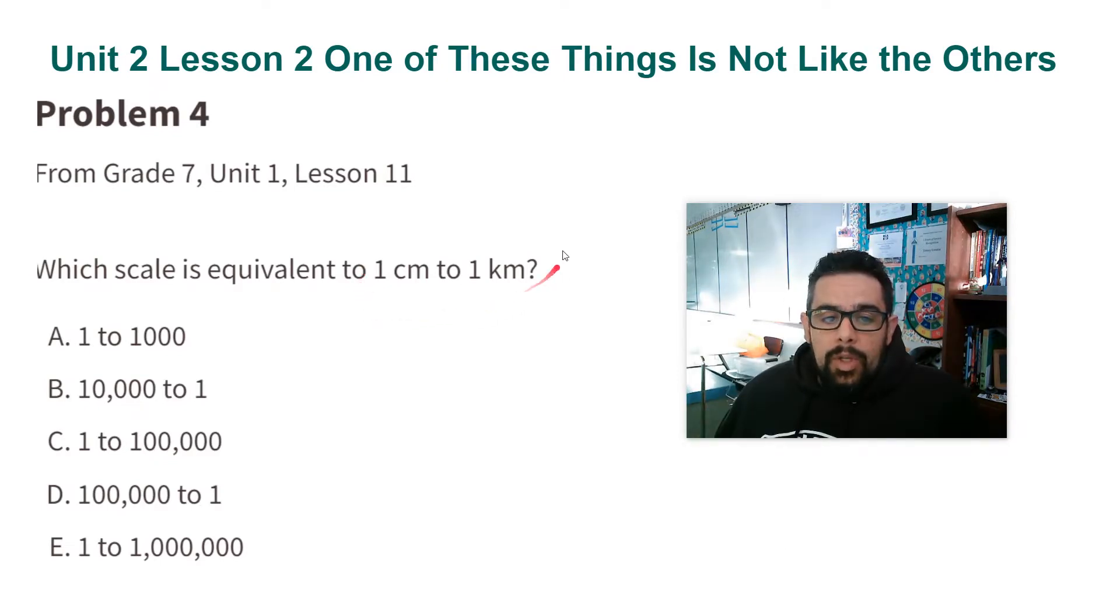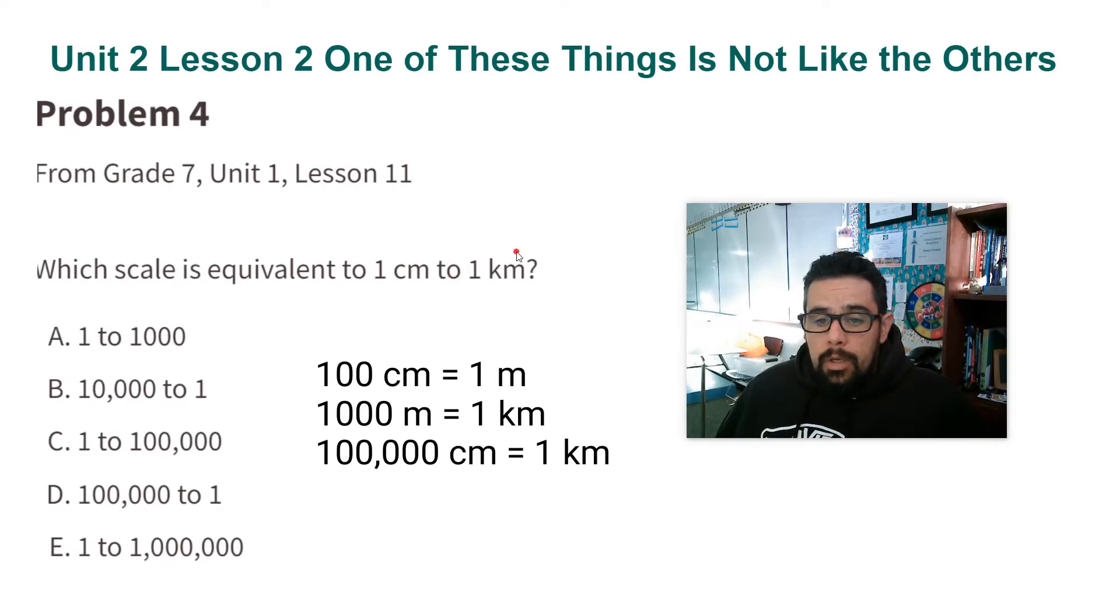What we're looking for here is how many centimeters are there in one kilometer. 100 centimeters is one meter, and there are a thousand meters in one kilometer. So that means there is a total of 100,000 centimeters in one kilometer.